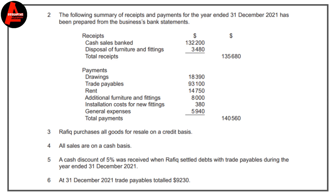Number three: Rafik purchases all goods for resale on a credit basis, and all sales are on a cash basis. A cash discount of five percent was received when Rafik settled debts with trade payables during the year ended 31 December 2021. At 31 December 2021, trade payables total $9,230.